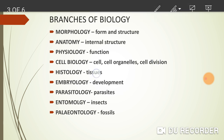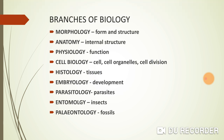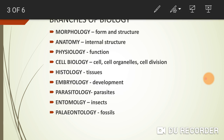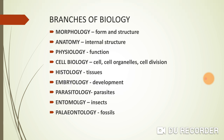Histology is the study of tissues. If we study the tissues of the eye — there are three layers in the eye: sclera, choroid, and retina — that is histology. Embryology is the study of the development of any organism.